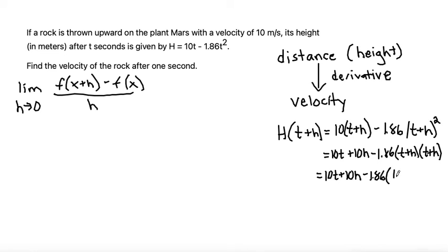So t times t is t², t times h is th, h times t is another ht or th, and then an h². Combining like terms, I get t² + 2th + h².